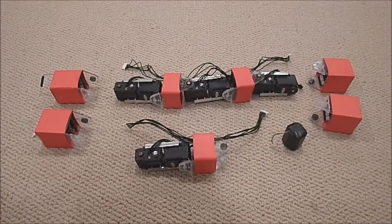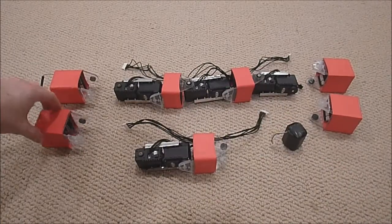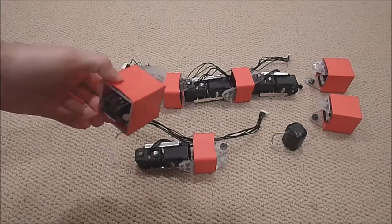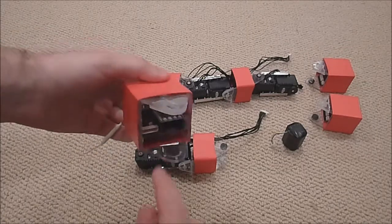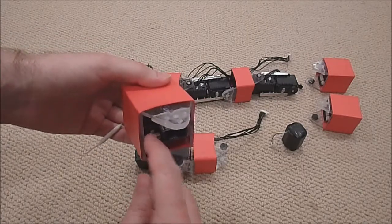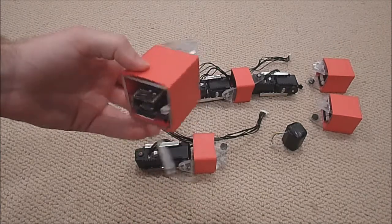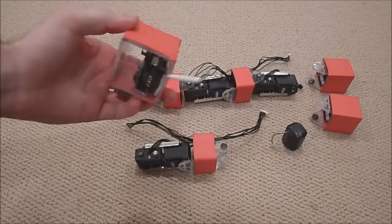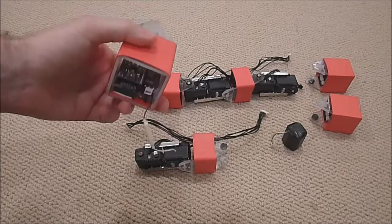The brain of this robot is actually located in the tail. That's where the microcontroller is along with several other features. Right here is a tilt sensor and that allows the robot to detect which side it's on and adjust the motion algorithms based on its orientation.